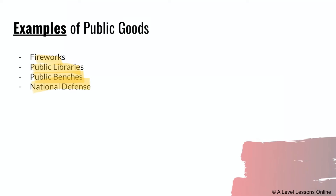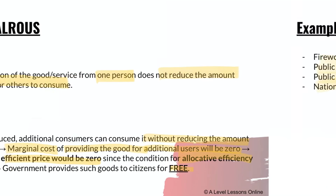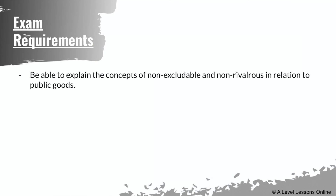These goods are provided due to the issue of non-excludability, which creates the free rider problem and hence a missing market, as well as the non-rivalrous consumption issue, which results in an efficient price of zero. Because of the allocative efficiency formula and the additional cost being zero, the government provides these services and goods for free.